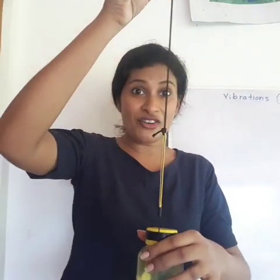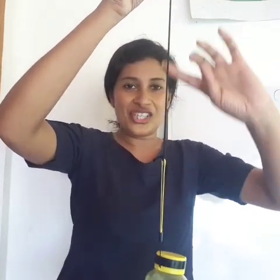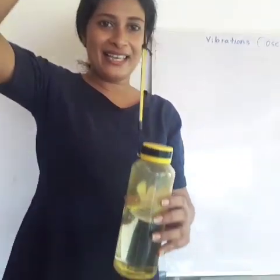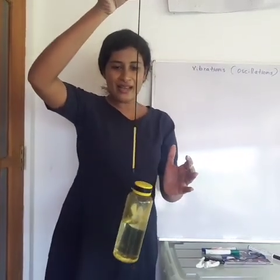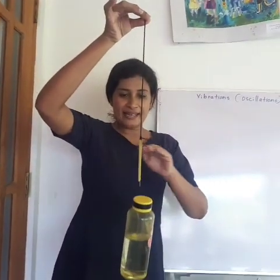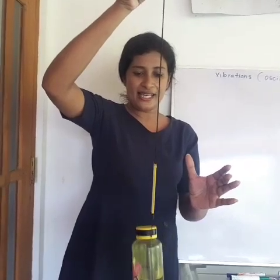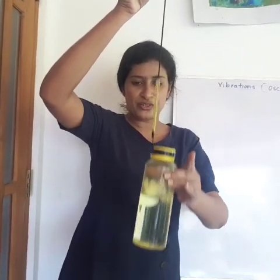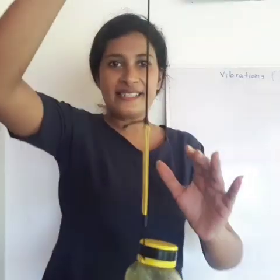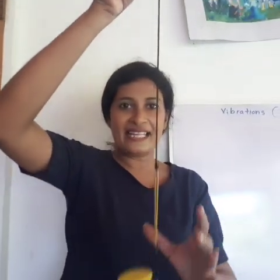Another way of showing oscillation is something suspended with an elastic band or a spring. Now this is the mean position. If I give it a small push, it goes up and down, up and down, around the mean position. It goes up and down, coming to the mean position, then down again, coming to the mean position, then going up and coming back to the mean position. This is another type of vibration, which can also be seen in springs and even in yo-yo toys.